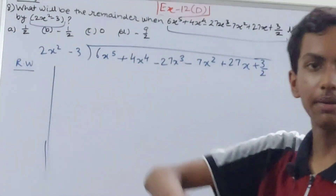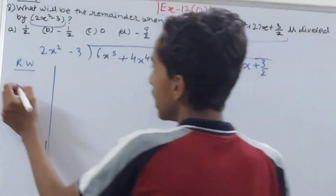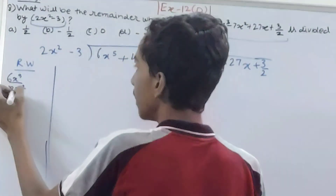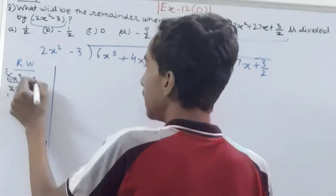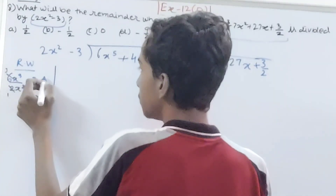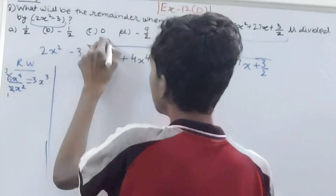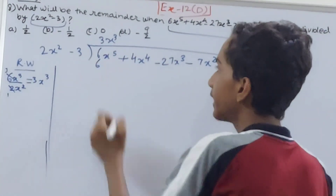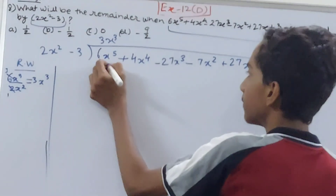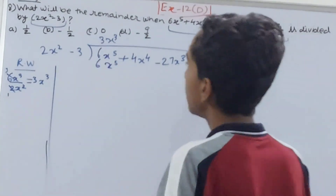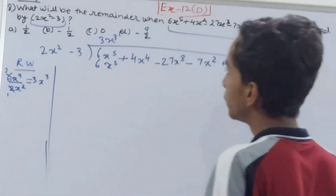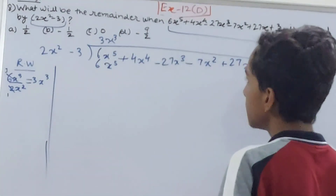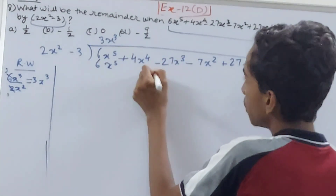We divide 6x to the power 5 by 2x squared, which gives 3x cubed — that is 5 minus 2 equals 3, so 3x cubed. Then 3x cubed into 2x squared: 3 times 2 is 6, x squared times x cubed is x to the power 5. Then minus 3 into 3x cubed gives minus 9x cubed, which we put under the corresponding term.